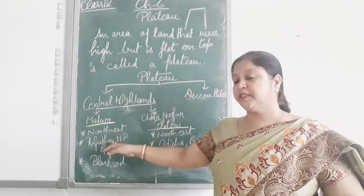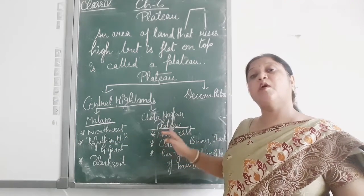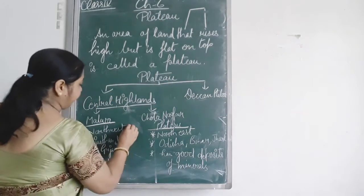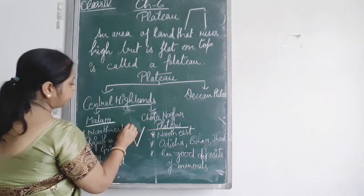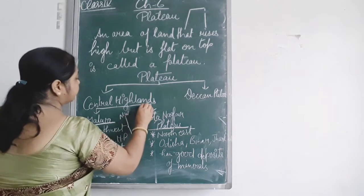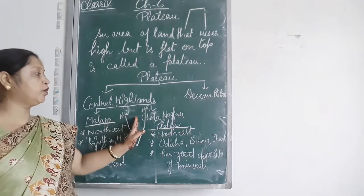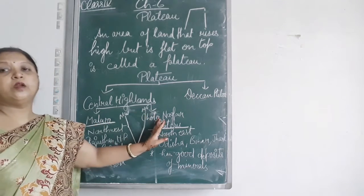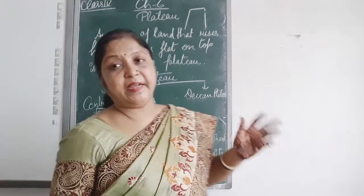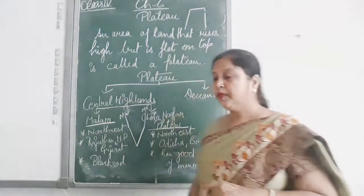Malwa Plateau is in the North West direction, and Chota Nagpur Plateau is in the North East direction. You can see page number 26, the India map. It is given here clearly.